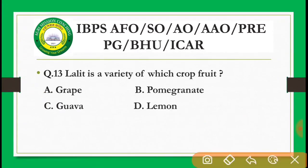Next question: Lalit is a variety of which fruit crop? Options are: grape, pomegranate, guava, lemon. This is an easy question — Lalit is a variety of pomegranate (anaar). It is frequently asked in exams.